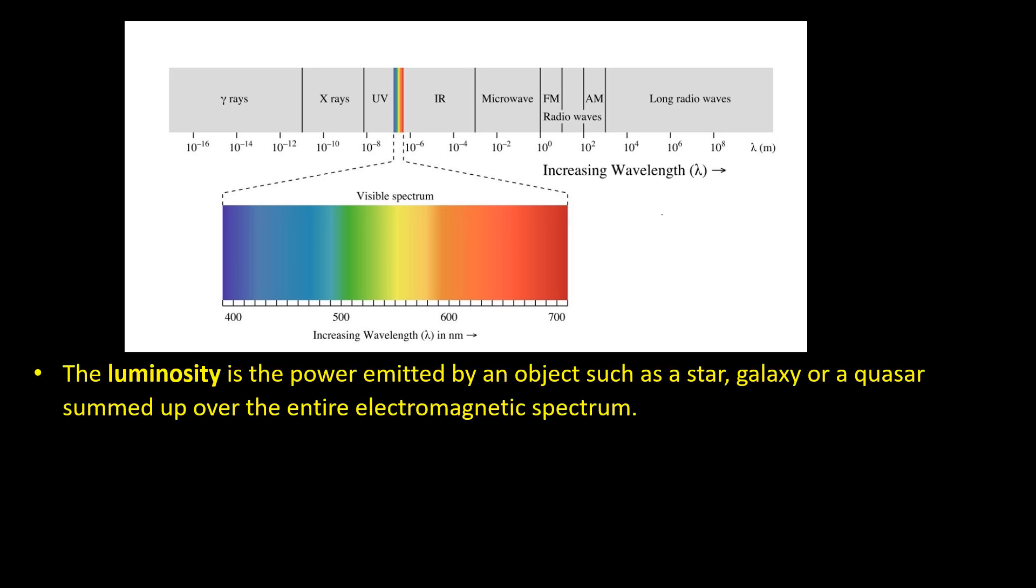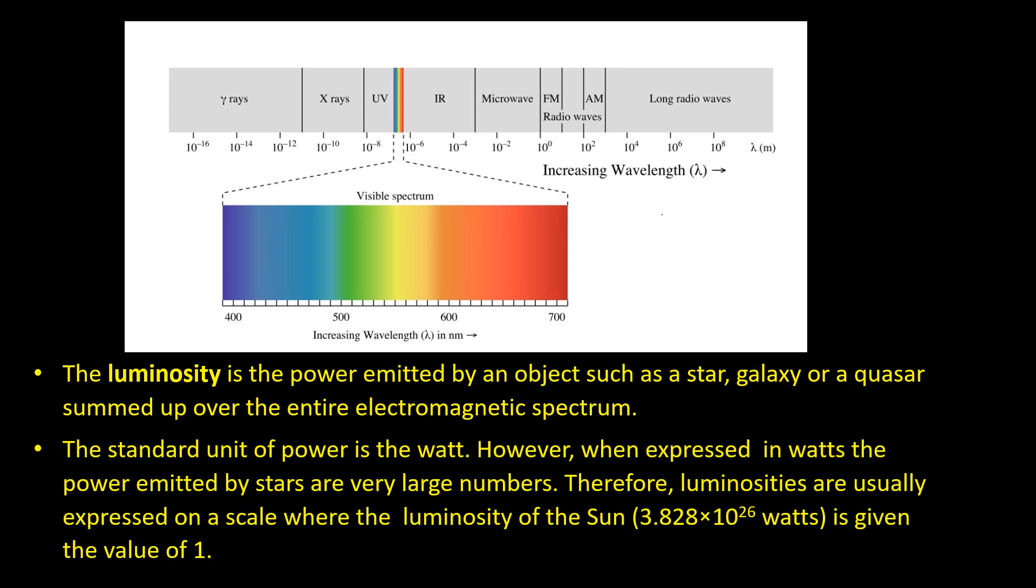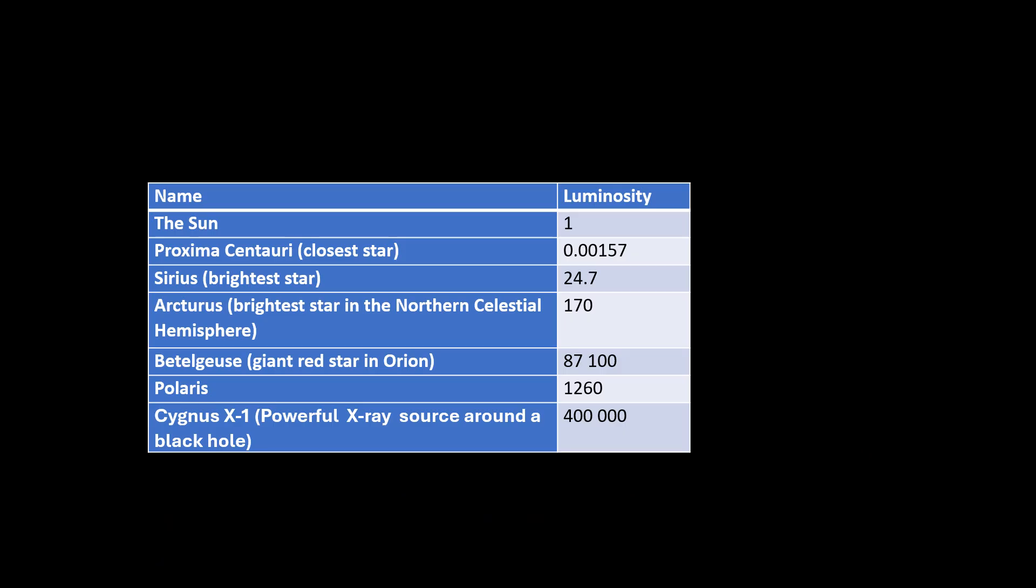The luminosity is the power emitted by an object such as a star, galaxy or a quasar summed up over the entire electromagnetic spectrum. The standard unit of power is the watt. However, when expressed in watts the power emitted by stars are very large numbers. Therefore, luminosities are usually expressed on a scale where the luminosity of the sun is given the value of 1. And here are the luminosities of some objects.